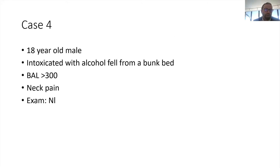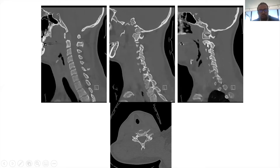This is a trauma case: a patient, 18 years old, intoxicated with alcohol, fell from a bunk bed. Alcohol level was over 300. They complained of neck pain; neurological exam was normal. They came in via ambulance on trauma protocol — ABCs all checked out. Part of the evaluation is to get a CT of the cervical spine, which is the gold standard.